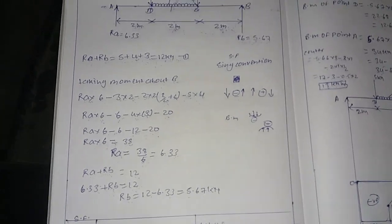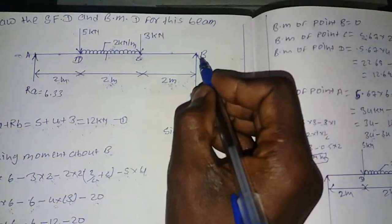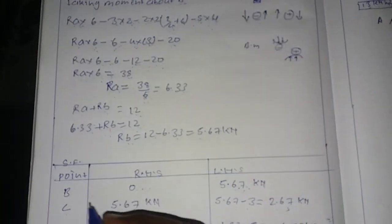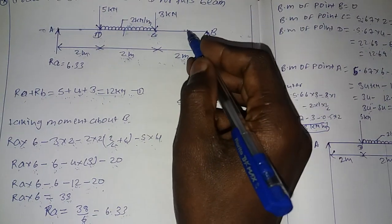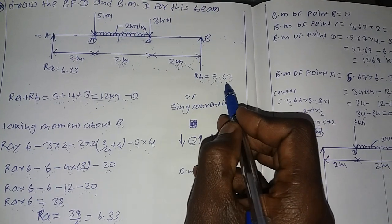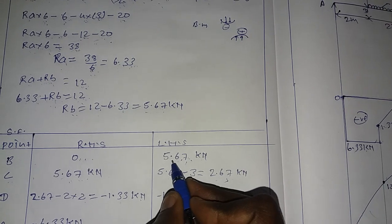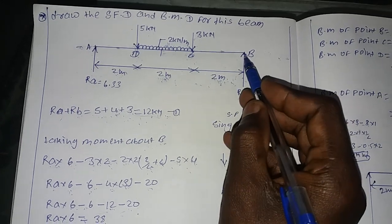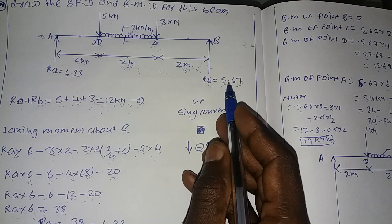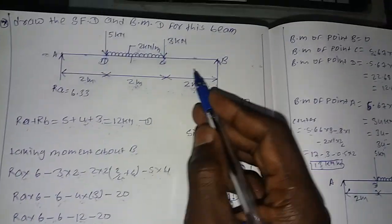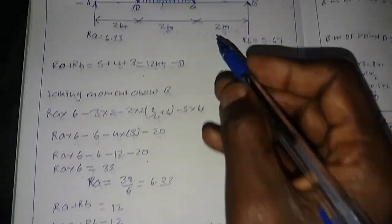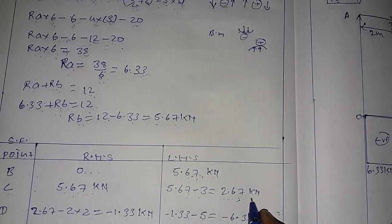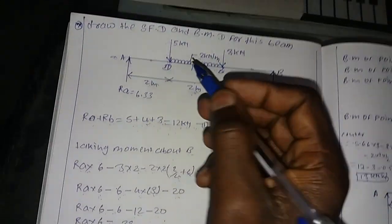Next step is shear force, calculated from the right-hand side and left-hand side at each point. At point B, right-hand side load is 0. At point B left-hand side, the reaction load is 5.67 kN. At point C right-hand side, the shear force is 5.67 kN. At point C left-hand side, shear force equals 5.67 minus 3 equals 2.67 kN.